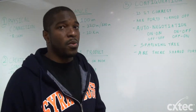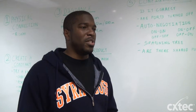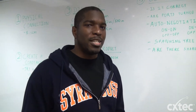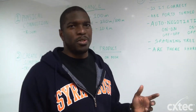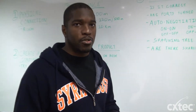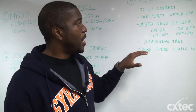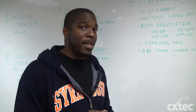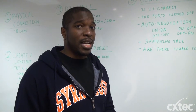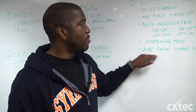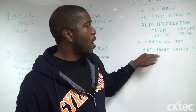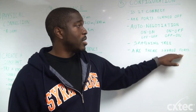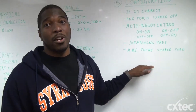Spanning tree is another one. It can get complex, but make sure there's not a loop in the system. Usually if there's a loop, you'll see a bunch of lights flickering like a Christmas tree. Spanning tree may have also shut down one of the ports, and that's why you're not getting a connection. The third configuration item is shared ports, and I'm going to show you an actual switch so you can see what I'm talking about.